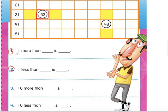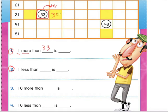For number one they're asking: what is one more than 33? If we use a 100 chart, we are going to look at this number that we're focusing on and we're going to jump over just one box, which is going to mean plus one. So if we go one more over we're going to have 34. So now we can say one more than 33 is 34.